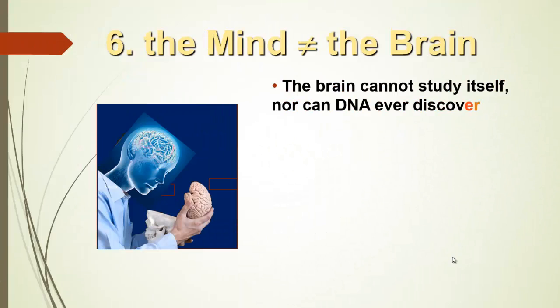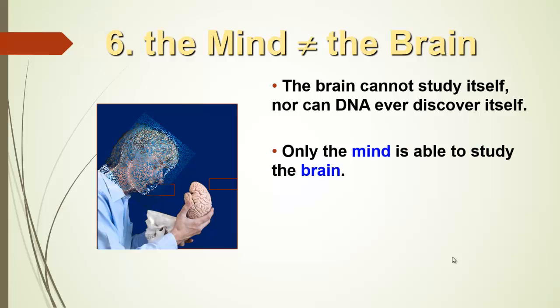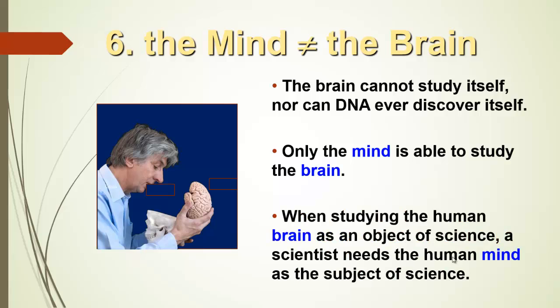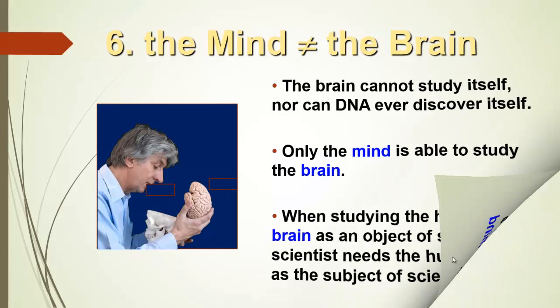The brain cannot study itself, as little as DNA can ever discover itself. Only the mind is able to study the brain. It is the mind of the scientist that can study the brain, not the brain of the scientist. When studying the human brain as an object of science, a scientist needs the human mind as a subject of science.